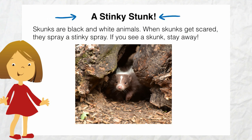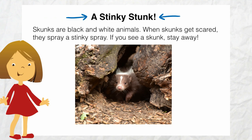Looking at the title of a book can also help you to figure out the author's purpose. The title of this book is a stinky skunk. That tells me that skunks smell bad. Let me look at the rest of the text for information that can help me figure out what the author is trying to teach me. Here it is — it says at the end of the page: if you see a skunk, stay away. I think the author's purpose is to tell us not to go near skunks because they're stinky.